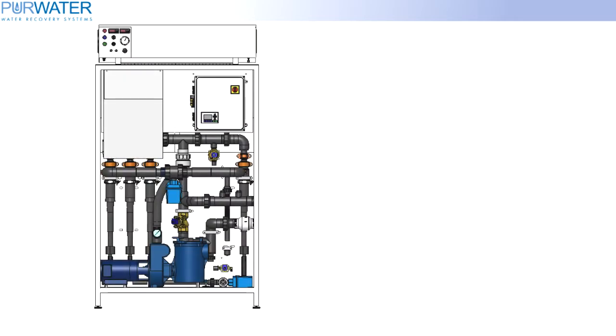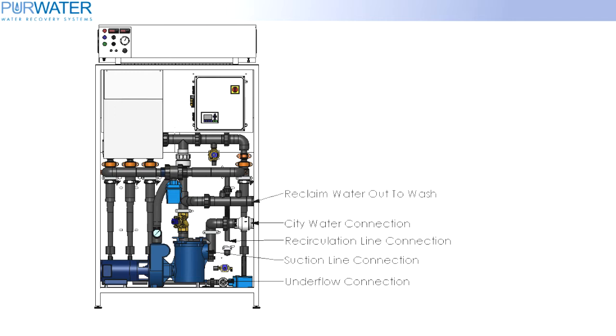There are five plumbing connections to be made on the reclaimed system. A suction line, a recirculation line, an underflow line, a freshwater or city connection, and lastly, the reclaimed water out to the wash equipment.